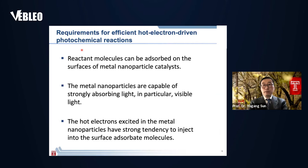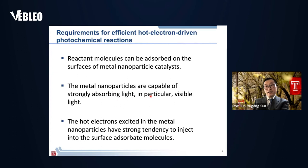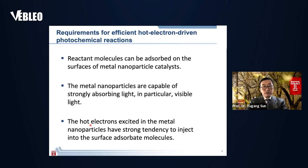The photochemical reaction will occur on the surface of a metal nanoparticle catalyst. The requirements include: the reactive molecules must be adsorbed on the surface of the catalyst with appropriate adsorption strength; the metal nanoparticle should be able to strongly absorb light — in particular visible light — to better match the solar spectrum; and the hot electrons excited in the metal nanoparticles should have a strong tendency to inject into the surface-adsorbing molecules to drive chemical reactions.